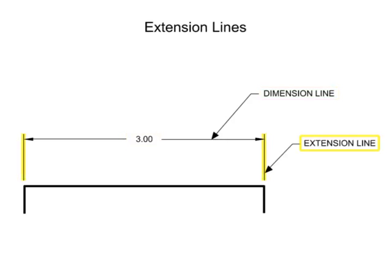Extension lines are used to indicate the extension of a surface, or to point to a location outside the part outline. They start with a short, visible gap from the outline of the part, and are usually perpendicular to their associated dimension lines. They help illustrate how far a dimension extends.